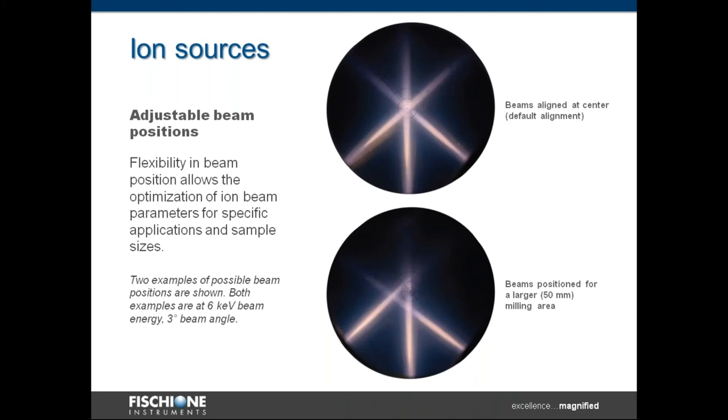This slide shows the relative position of the ion sources and ion beams, and this essentially is the secret sauce of the instrument. If you look at the beams in the upper position, you can see them aligned so that they cross at the center point, which is the axis of rotation. In the lower image, the beams are configured in a birdfoot type of configuration, and that allows the ions to project all the way out to the periphery of the sample. That's what produces the large milling area.